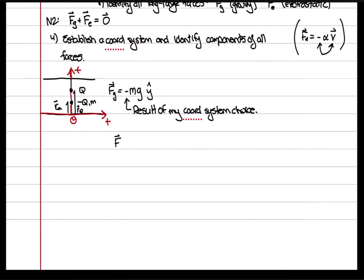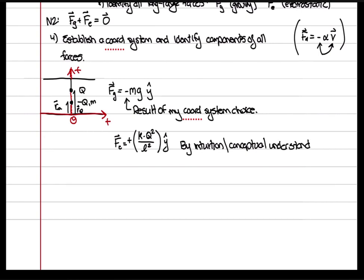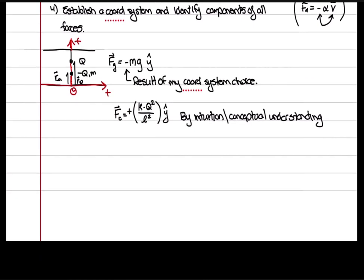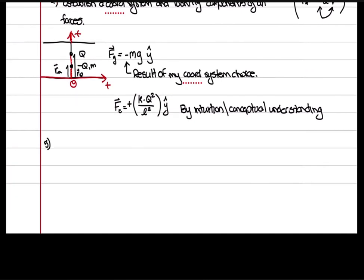The electrostatic force — without being too nitpicky — you can identify that the negative q charge should be pulled up. So it should be k q squared over l squared in the plus y direction by intuition and conceptual understanding. For 1D problems you can usually do that. For multi-dimensional problems you might want to be careful and go through all the steps. Step five would be to solve.